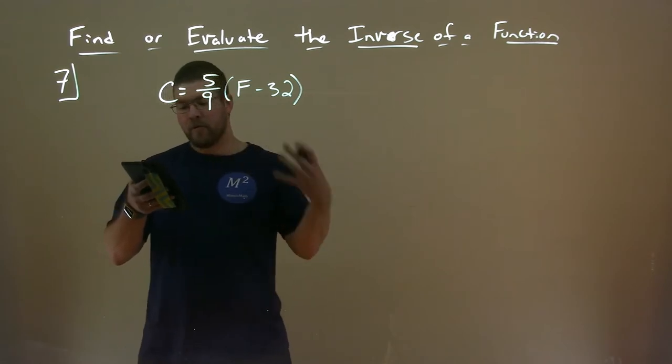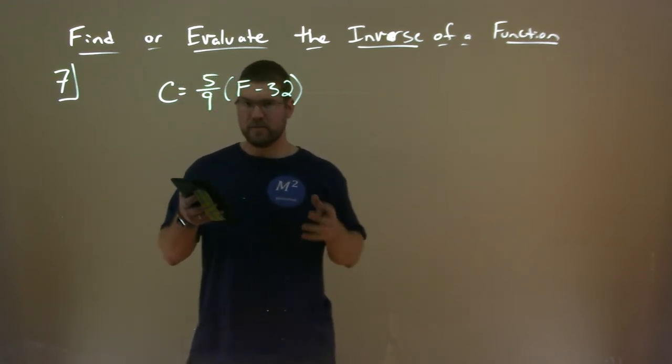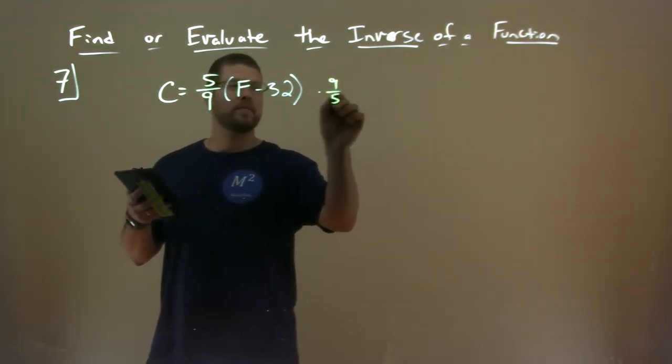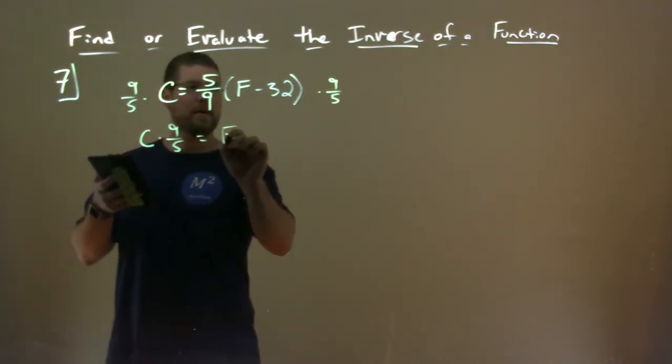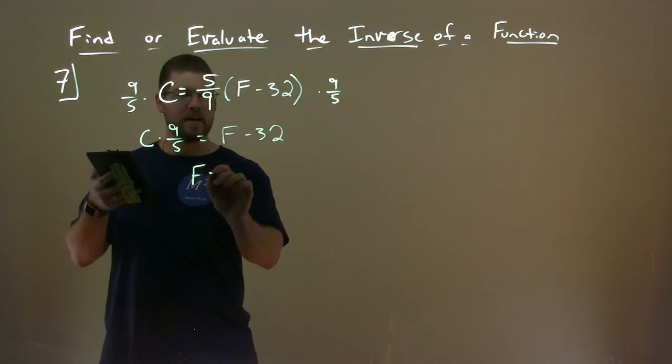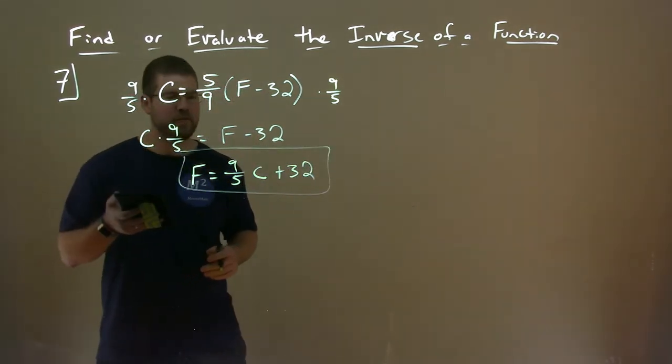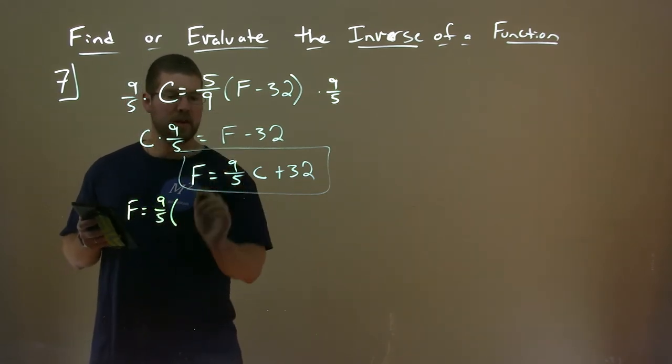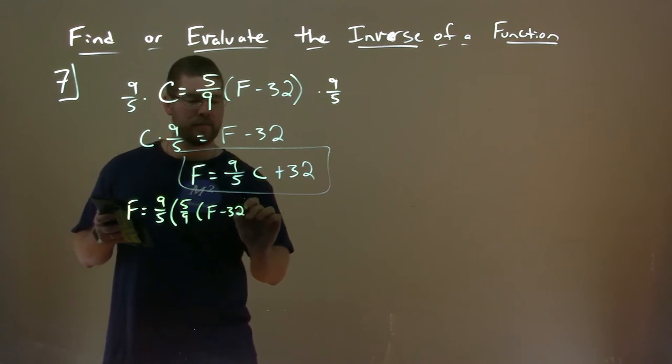So what we're going to do is use this formula here, and we're going to find its inverse. Find the inverse to find what is Fahrenheit to then Celsius. So to do that, we want to get F by itself. So we have to multiply both sides by 9 fifths. And we're left with C times 9 fifths equals F minus 32. Add 32 to both sides, and we're left with F by itself equals 9 fifths C plus 32. And we have the inverse function here.